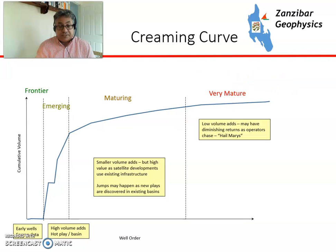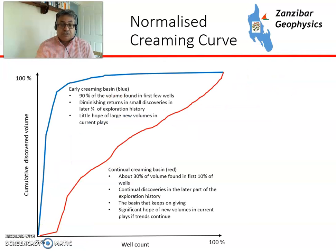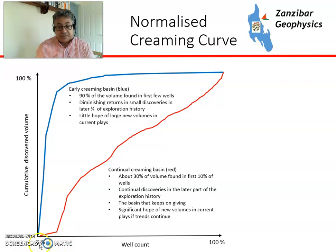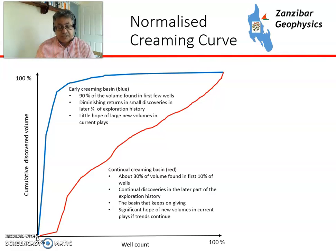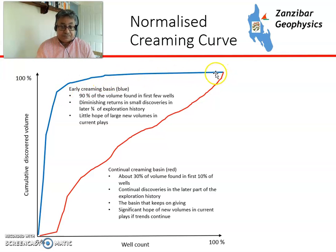So this is what a creaming curve looks like. There's another novel type called a normalized creaming curve, developed by a man called Andrew Lodge, who used to work with Premier Oil. What this does is you have a well count by percentage and a volume by percentage. A basin which effectively has one play — something like the East Irish Sea in the UK — has big discoveries initially and then very rapid creaming. Later wells just don't find anything; 90% of the volume is found in the first 10-20% of the wells.